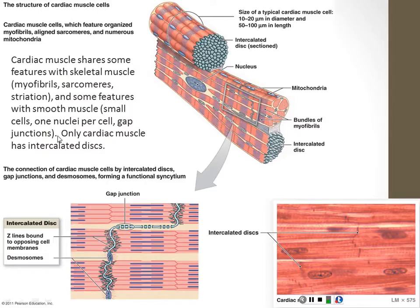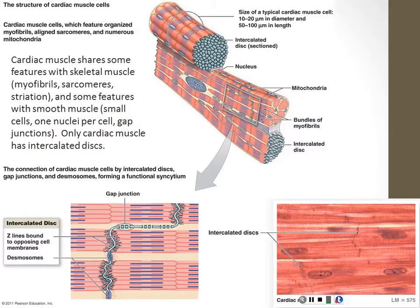Only cardiac muscle has intercalated discs, and only cardiac muscle branches and comes back together. So if somebody gave you a microscope slide and asked whether it's skeletal or cardiac muscle, the clues are: one nucleus per cell, intercalated discs, and branching fibers. Those are all characteristics of cardiac muscle and no other kind of muscle — a way to identify them.